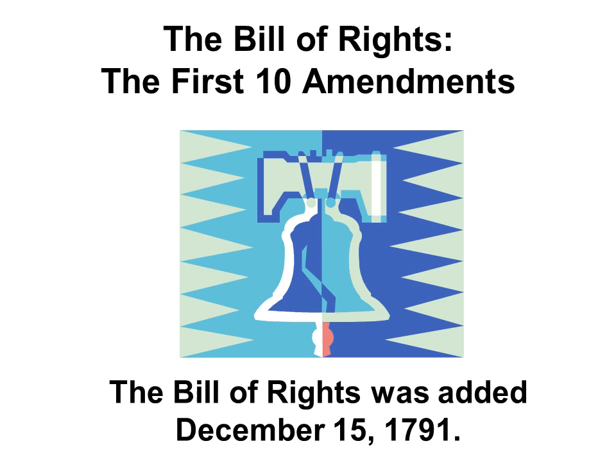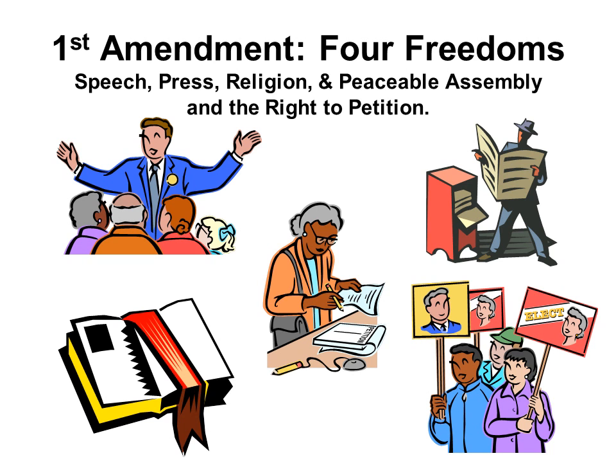The Bill of Rights is the first ten amendments to the Constitution. The Bill of Rights was added to the Constitution on December 15, 1791. The first amendment talks about the freedoms: freedom of speech, freedom of the press, freedom of religion, freedom for peaceable assembly, and the right to petition the government.